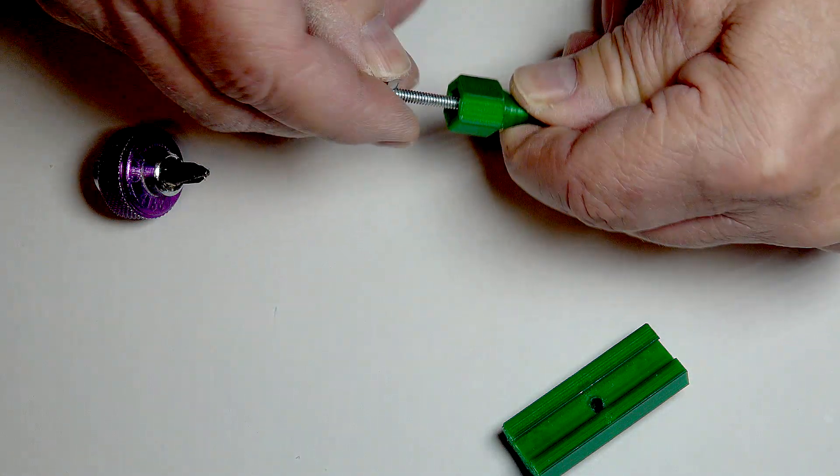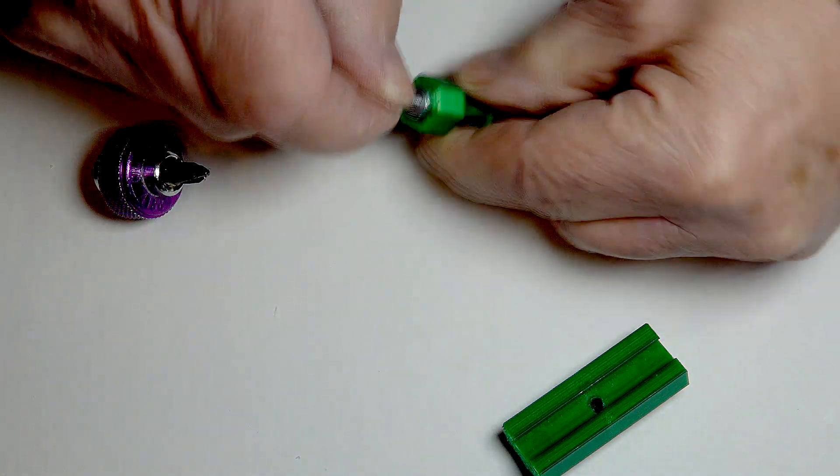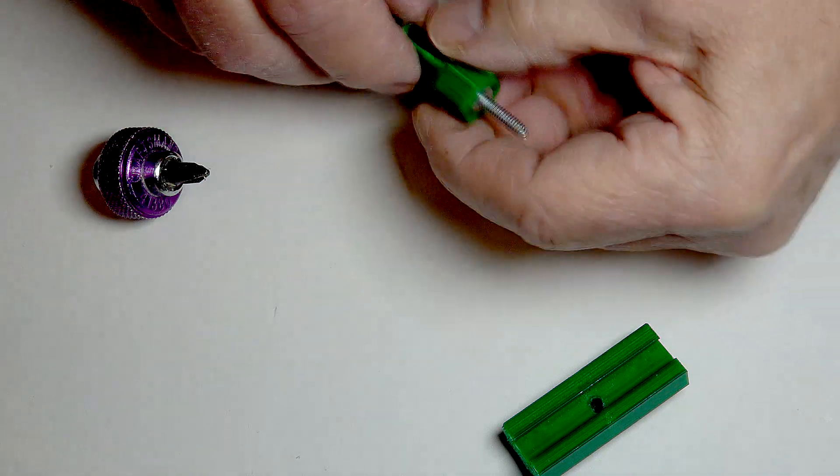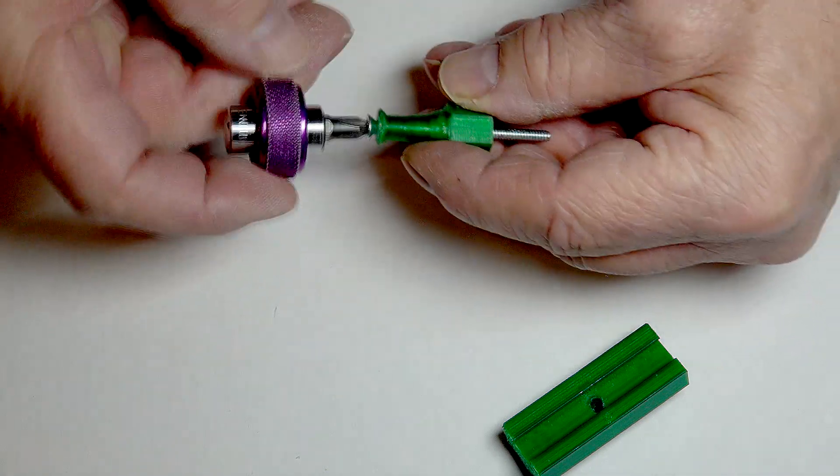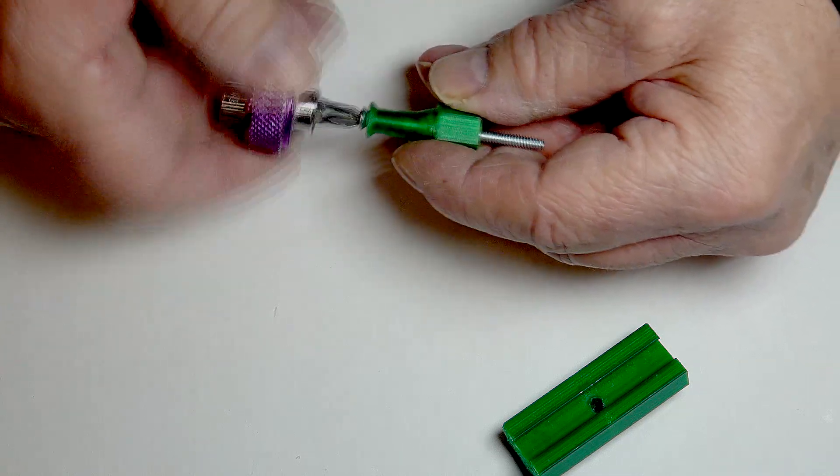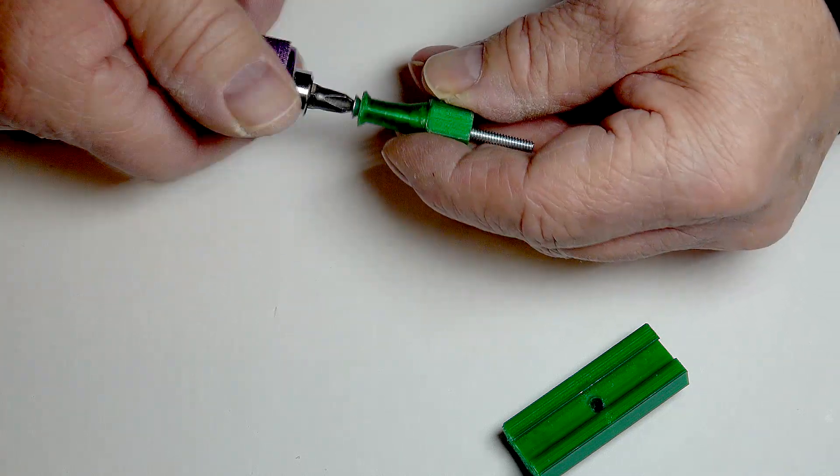Screw the nut onto the screw until it is flush with the hex hole and align it with the hex hole and turn the screw with the screwdriver pulling the nut into the hex recess until it is snug at the bottom of the recess.